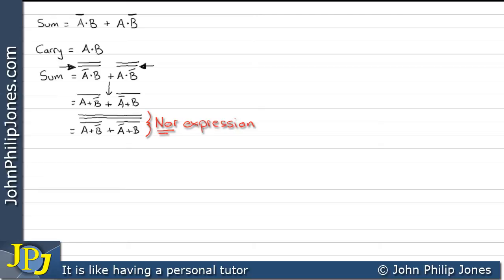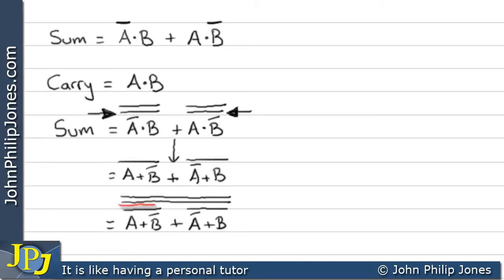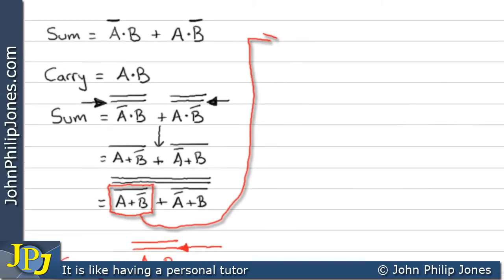We need to convert that NOR expression to a logic circuit, which we'll look at in a moment. For the carry, it is simply equal to A AND B. To get rid of that AND, we double NOT — which doesn't change functionality — then apply the bottom NOT: A becomes NOT A, AND becomes OR, B becomes NOT B, and the top bar stays. That's now a NOR expression.